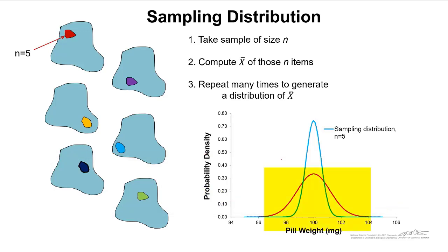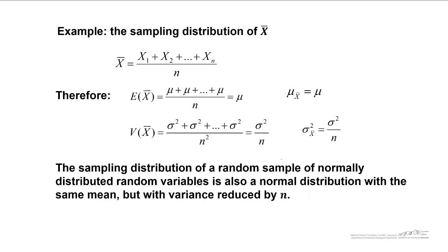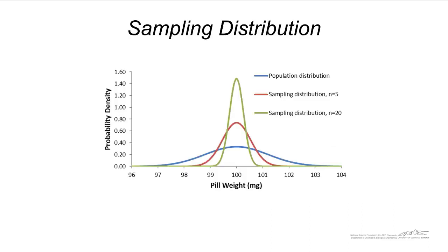This red line here represents the population distribution, and a sampling distribution is always going to be narrower than the population distribution. And that's because we have divided the variance of our population by n in order to get the variance of x bar. In fact, if we continue to increase the size of our sample, here the green is showing a sample of size 20, we narrow the probability density even more.